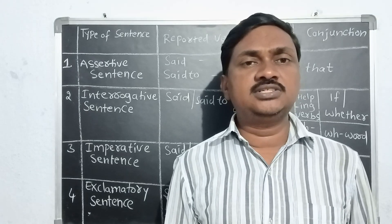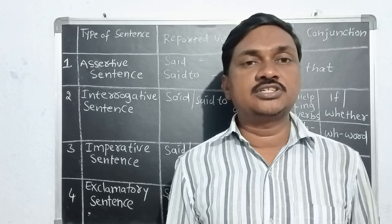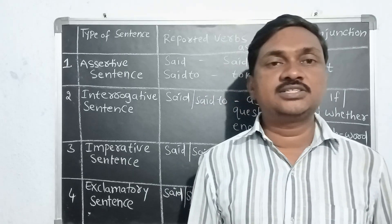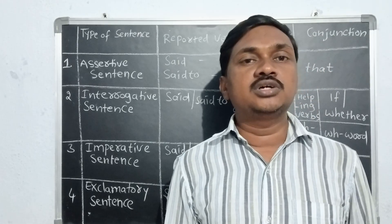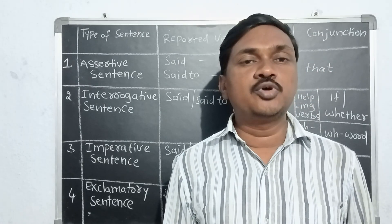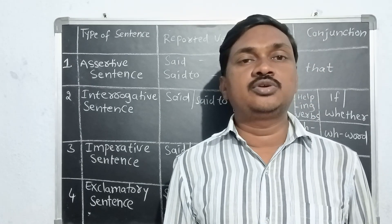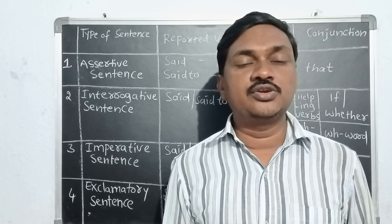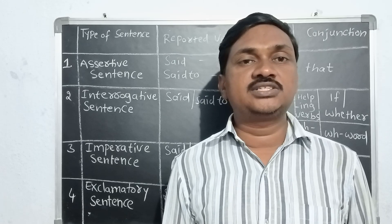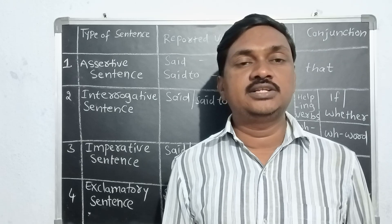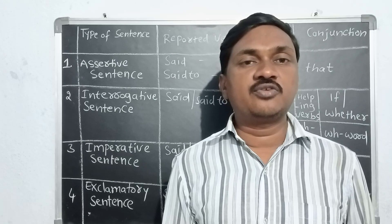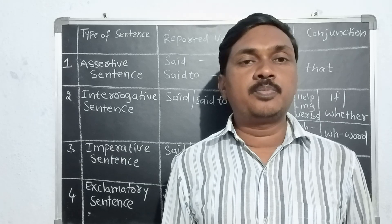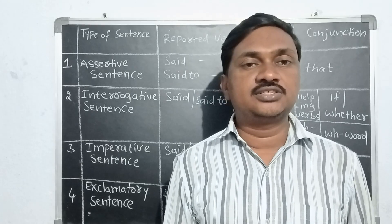If the reported verb is in past tense, the tense of the subordinate clause will change as follows. All present tenses change to their respective past tenses — simple present changes to simple past, present continuous changes to past continuous, present perfect changes to past perfect, and present perfect continuous changes to past perfect continuous.